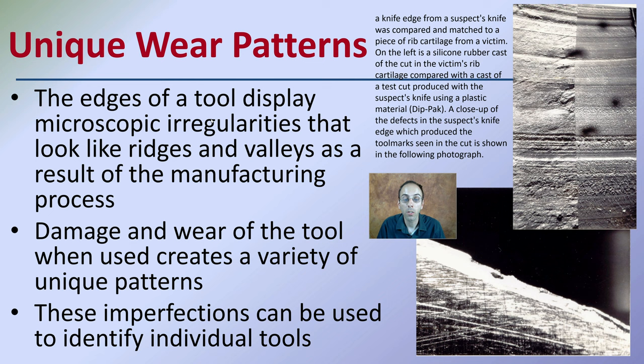You can see here a knife edge from a suspect's knife when compared to a piece of rib cage from a victim. The ridges and valleys have a lot of similar characteristics and almost directly match up. This can be used to help tie a particular knife — not just any knife — to a crime scene.